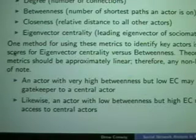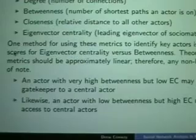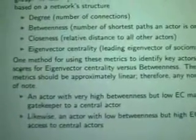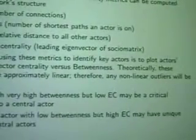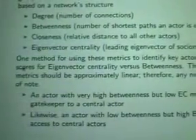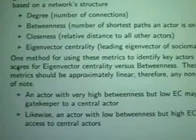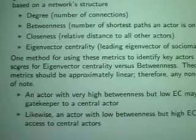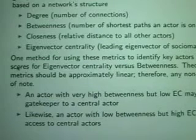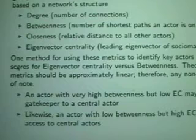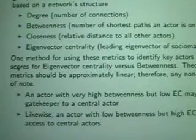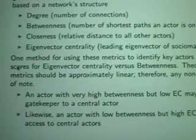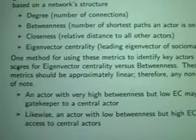Actors with low betweenness and high eigenvector centrality have a sort of unique access — we call them pulse takers. They know what's going on in the network, but they're not easily reached. The way we identify them is that theoretically we believe eigenvector centrality and betweenness centrality should roughly approximate a line. So if we were to scatterplot these two metrics, someone who doesn't have a lot of connections should also not have a lot of betweenness. In reality it never really works out that way, but it allows us to see who the extreme outliers are — those are the key actors we want to pay attention to.